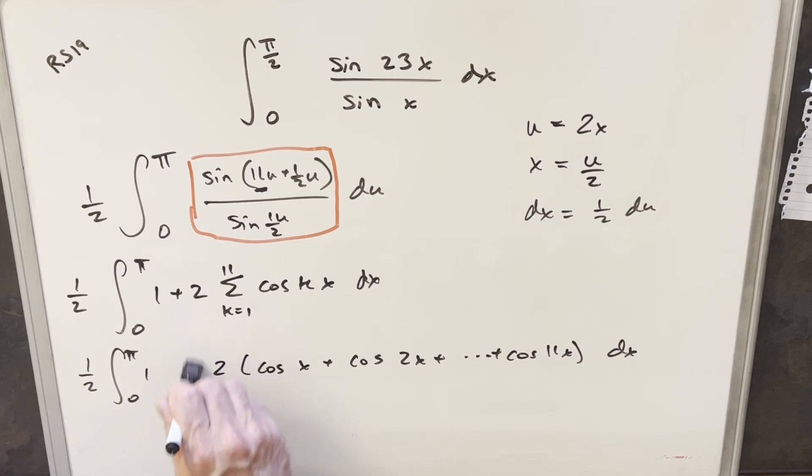And then from here, what I'm going to do is I'm just going to split this into two integrals. Okay, so we'll add a dx here, and we'll enter in an integral here. But when we distribute this half into the two, that's just going to cancel and become a one. So we'll remove that. And then over here, we're just integrating all the cosine terms from x to 11x.